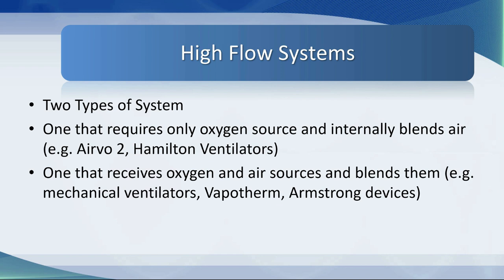Commercially available high flow systems fall into two types. First, devices that require only an oxygen source and internally blend air — such as the Airvo 2 and Hamilton ventilators. Second, devices that receive both oxygen and air through pipeline sources and blend within the machine — this includes modern mechanical ventilators, Armstrong devices, and the Vapotherm, which is very popular in North America.